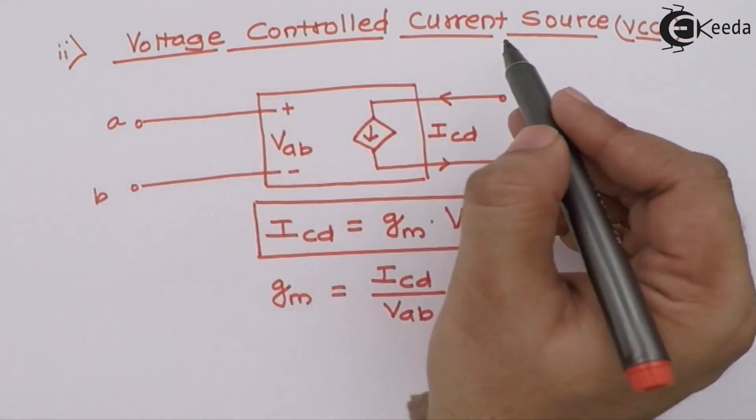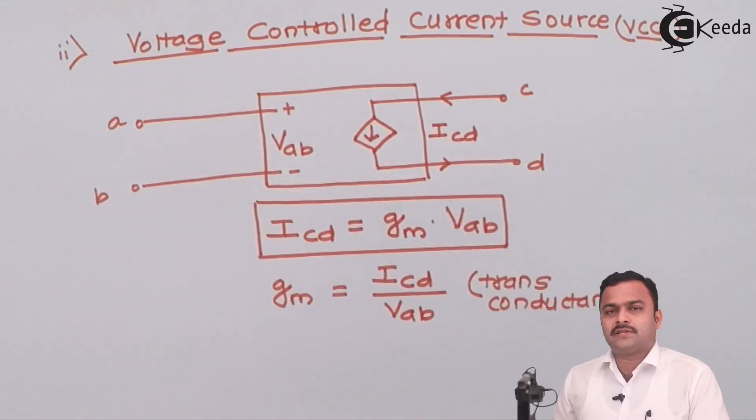So this is about a voltage control current source. Let's go ahead with the third classification.